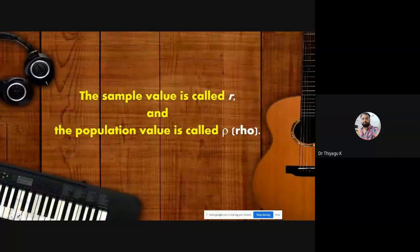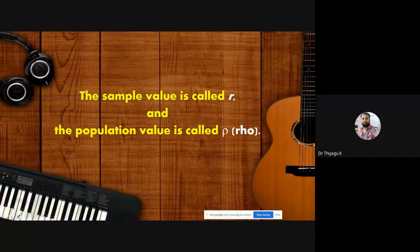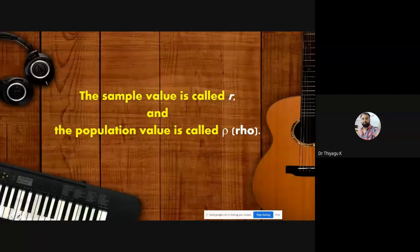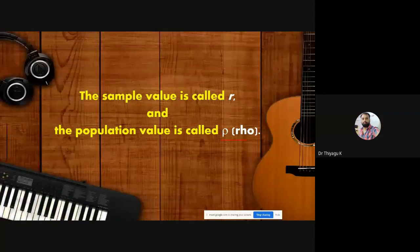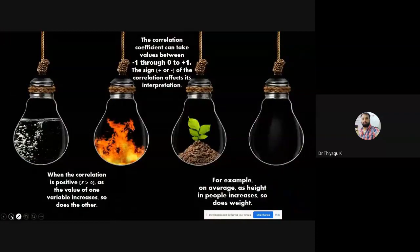Different books use different terms or symbols to denote the correlation value. Some books use 'r', some use 'rho'. If you are finding correlation for sample data, use the term 'r' — r represents sample correlation. The rho symbol represents population correlation. So you can understand that 'r' denotes sample and rho denotes population correlation.